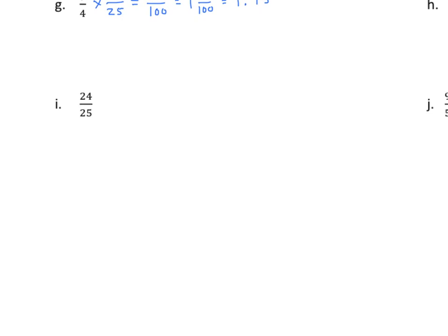24 twenty-fifths. We can multiply 25 times 4 to get 100, so the equivalent to 1 is 4 fourths. We multiply 24 times 4 and get 96, and 25 times 4 gives us 100. We get 96 hundredths, or 0.96.